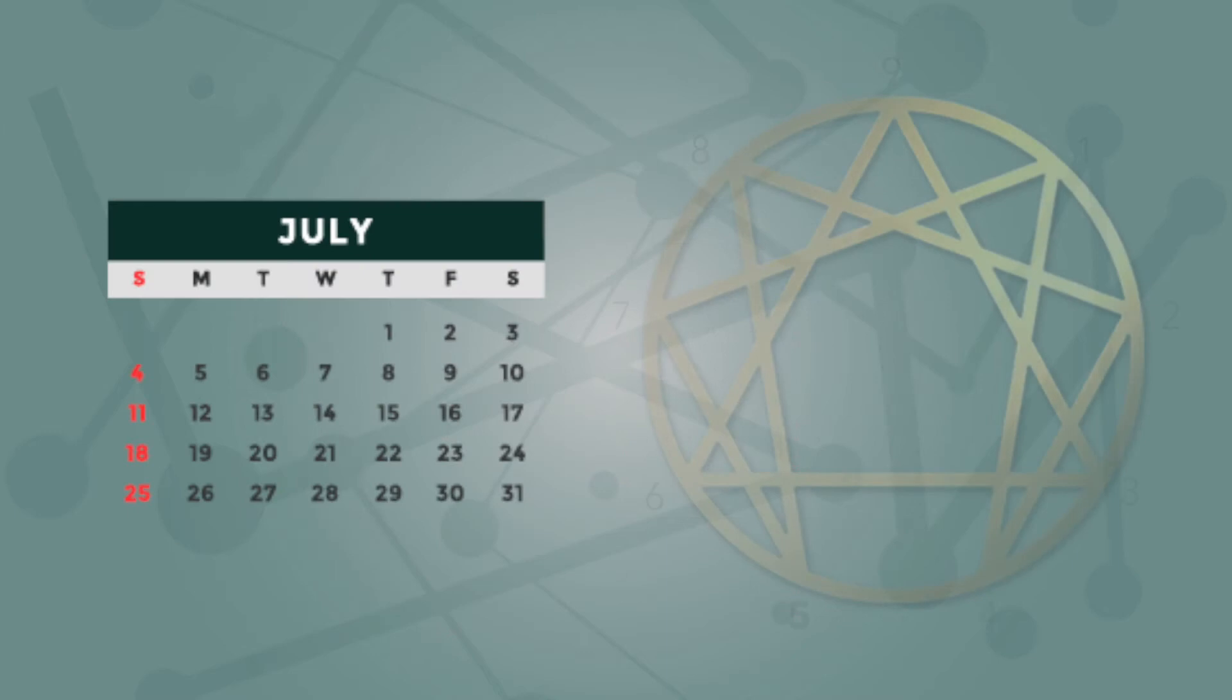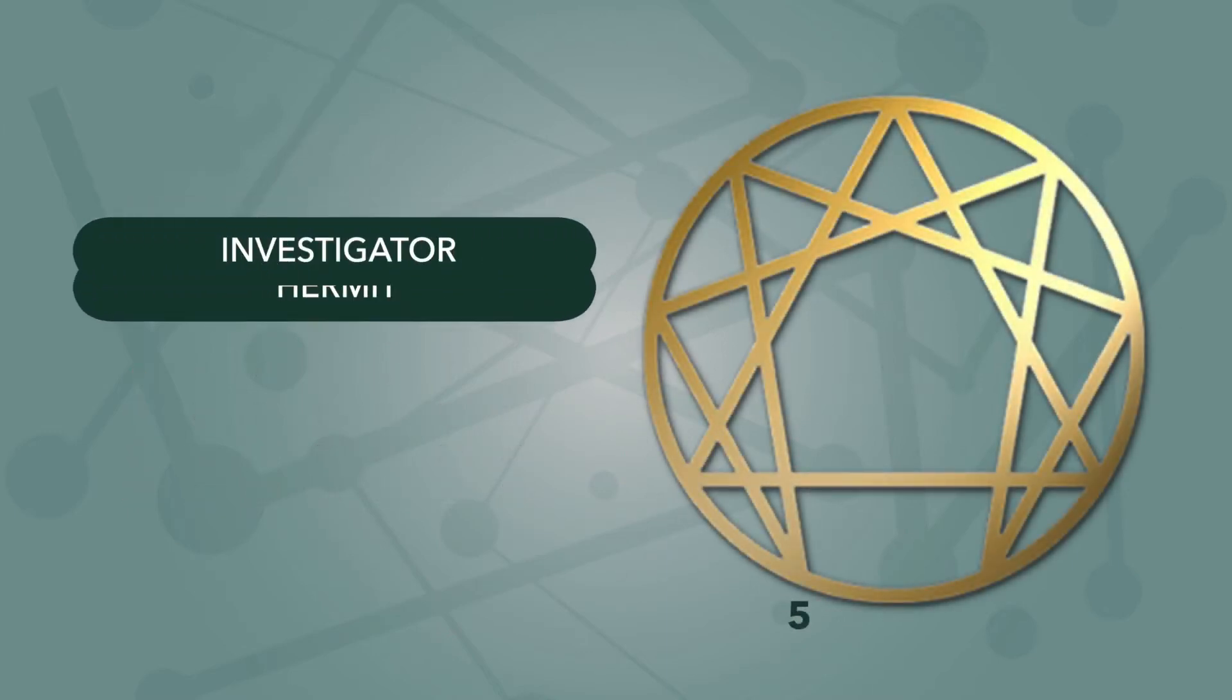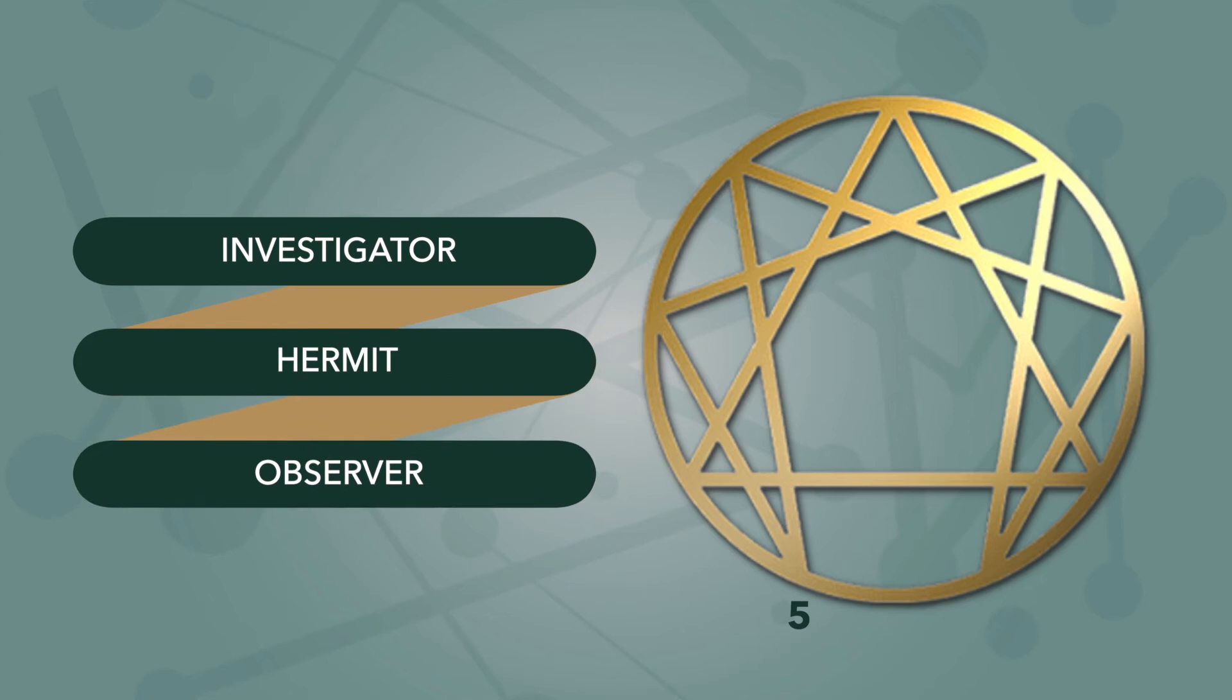Our focus this month is on the Type 5 from the Enneagram, known as the Investigator, Hermit, Observer, and no doubt many other names.